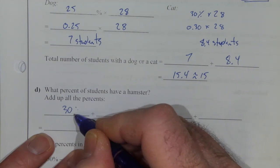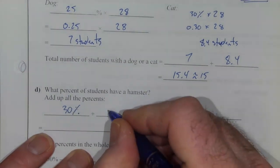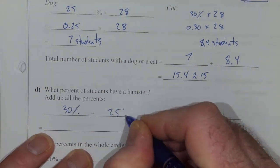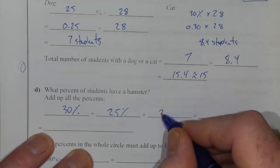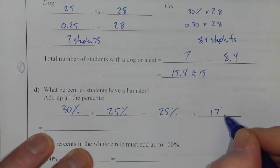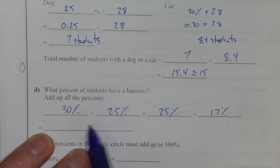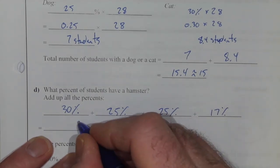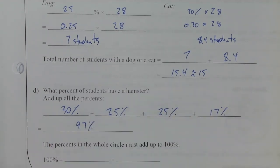Cats was 30%. Dogs is 25%. No pets was 25%. And other is 17%. When you add that up, 30 plus 25 plus 25 plus 17, you end up with 97%.